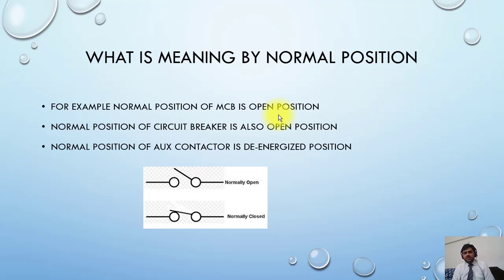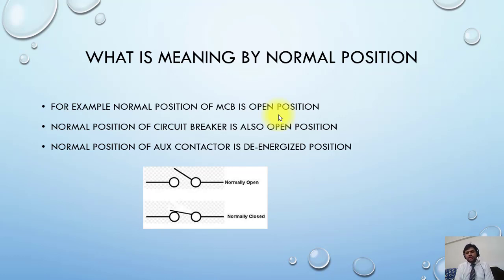In short, the circuit breaker position is considered the open position and the circuit breaker auxiliary contacts are drawn in the open position. The same is shown in the drawing — the circuit breaker is shown open. This is the normal position. All devices in the drawing are shown in normal position, de-energized position, or open position.